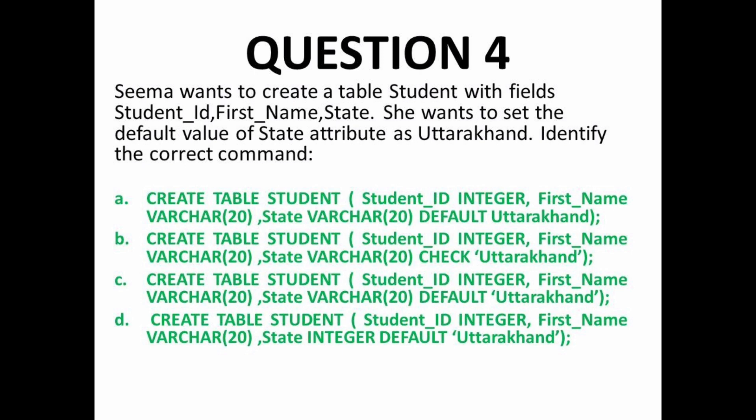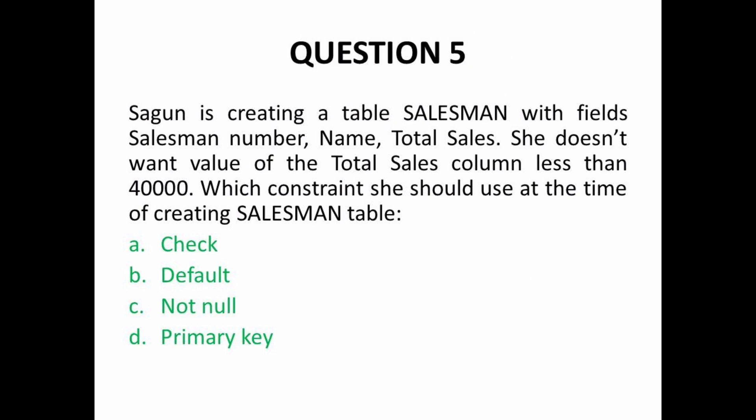Option B uses CHECK constraint — that is completely wrong here. Option D sets state as INTEGER data type, so option D is also wrong. Comparing options A and C: in option A, the value 'Uttarakhand' is not enclosed in quotes, while in option C it is enclosed in quotes. Since the default value is a string type, we must enclose it inside quotes. So option C is the correct answer.